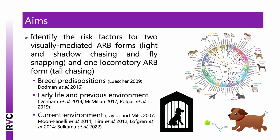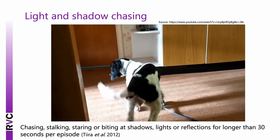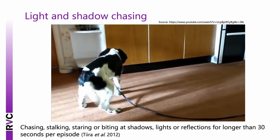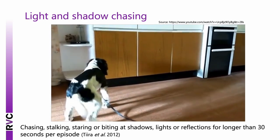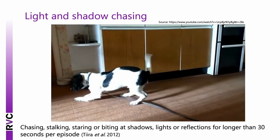The main aim of this study was to identify risk factors for two visually mediated ARB forms — light and shadow chasing and fly snapping — and one locomotory ARB form, tail chasing. We also aimed to confirm previously discovered risk factors including breed predispositions, early life environment, and current environment, and to compare risk factors for visually mediated versus locomotory ARBs, as these may require different treatment. Light and shadow chasing is defined as chasing, stalking, staring or biting of shadows, lights, or reflections for longer than 30 seconds per episode.